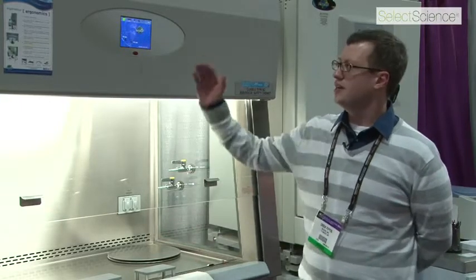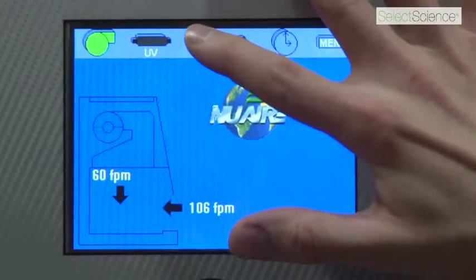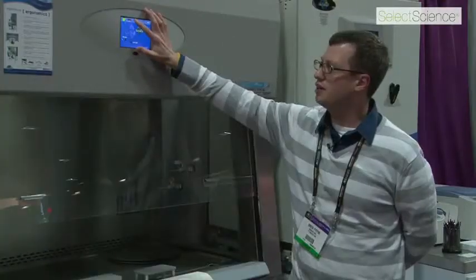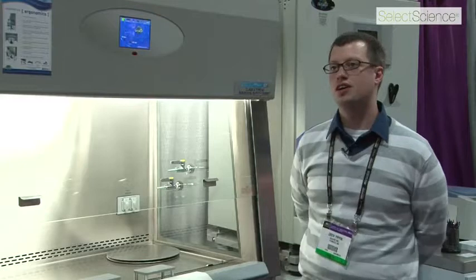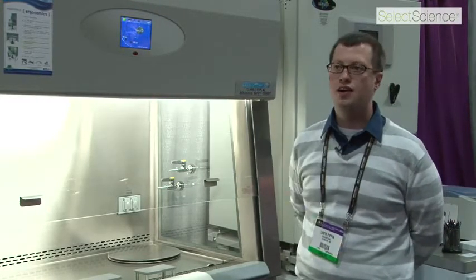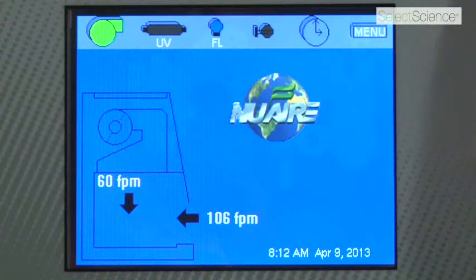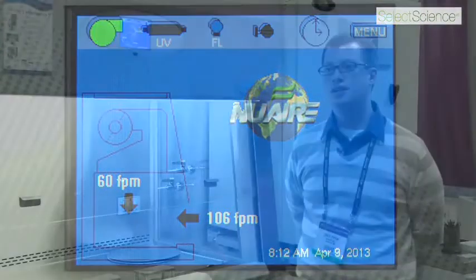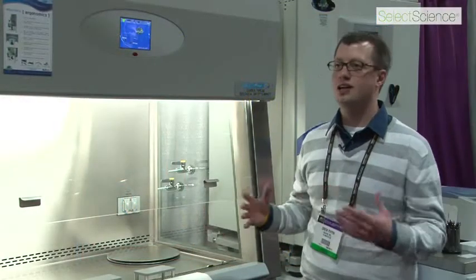With this unit, we have a touchscreen control, so everything you do on the unit is controlled on the touchscreen, all the functions. And it gives you real-time data as far as the inflow velocity, as you see here, is 106 feet per minute, and downflow at 60 feet per minute, so you know you're getting that protection and sterility.